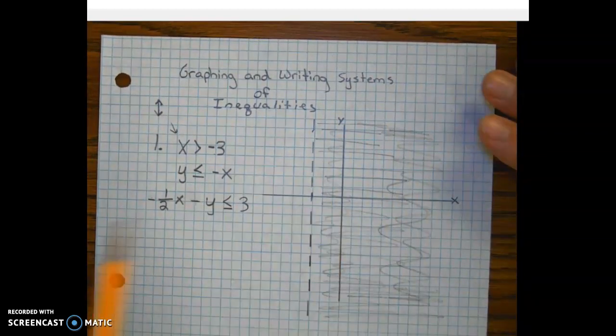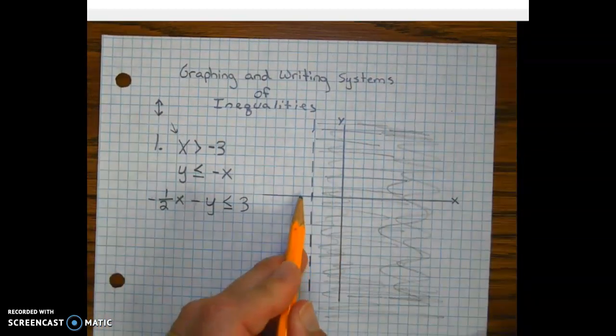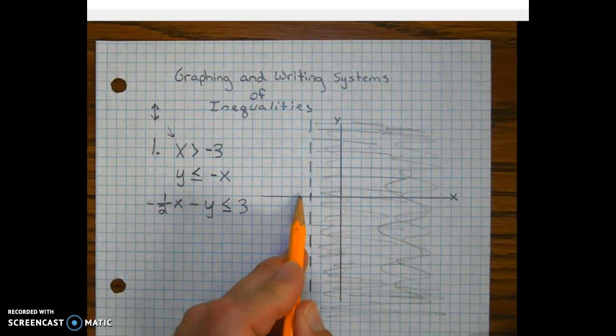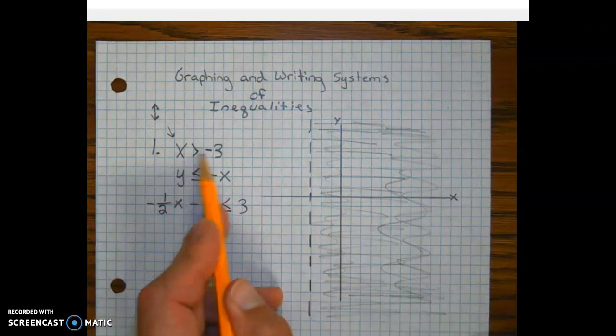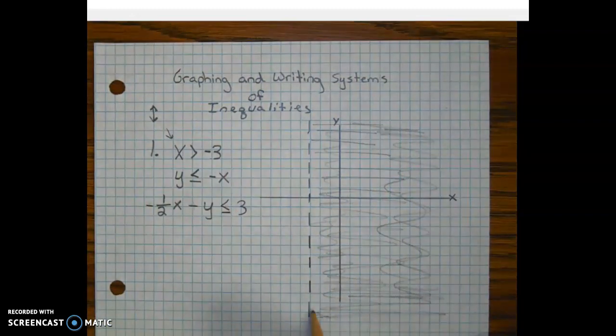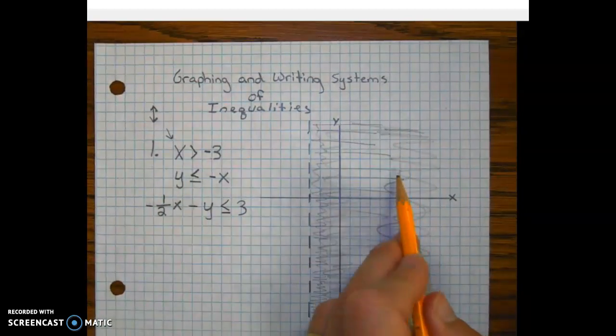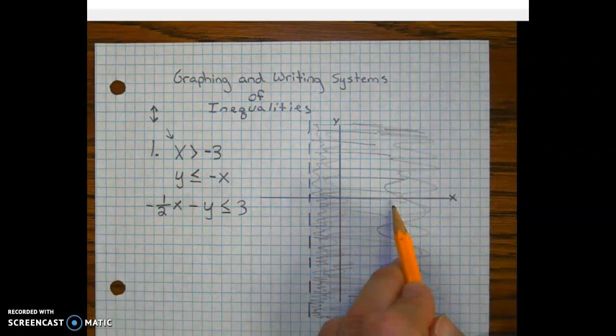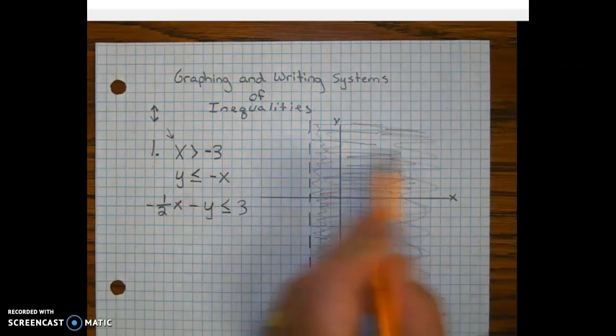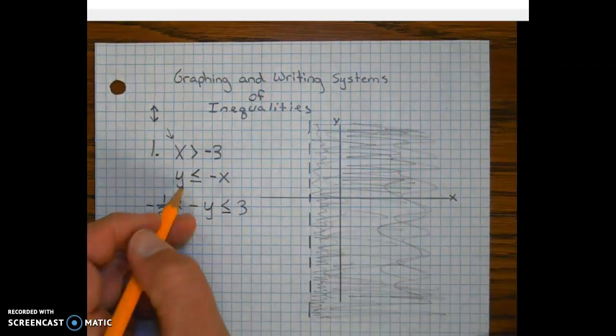As you can see, if I choose a point to the left of negative 3, negative 4, is negative 4 greater than negative 3? No. So remember to use a test point to verify where your shading goes. The shading represents the solutions. Don't forget that. Moving on to the next one.